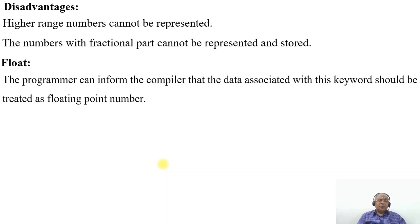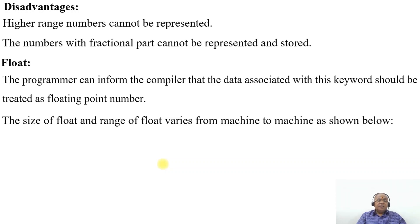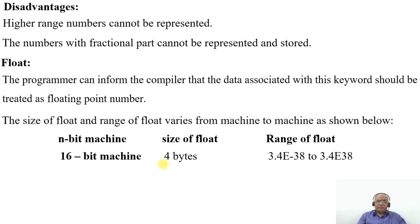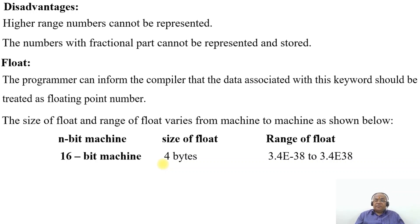What is float? The programmer can inform the compiler that the data associated with this keyword should be treated as a floating point number. The size of float and its range varies from machine to machine. For a 16-bit machine, the size of float is 4 bytes, and the range is plus 3.4 × 10^-38 to 3.4 × 10^38.